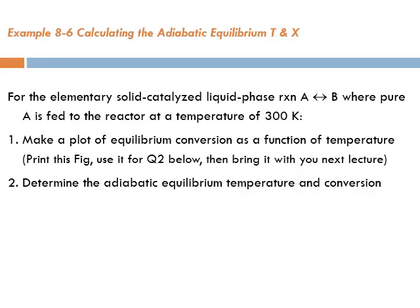Let's take a numerical example: an elementary solid-catalyzed liquid-phase reaction A ⇌ B, where pure A is fed to the reactor at a temperature of 300 K (T-naught). The first requirement is to make a plot of equilibrium conversion Xe as a function of temperature.